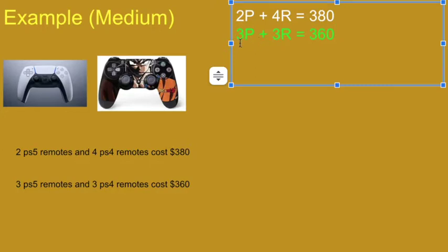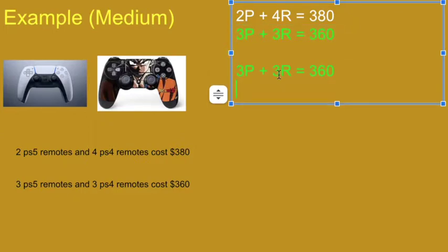One trick is, if you have matching coefficients, 3 and 3, I could always take the green equation and just cut everything down by one third. If 3 of each of these costs 360 dollars, then 1 will cost one third of that, 120 dollars. One of each type of remote costs 120 dollars.